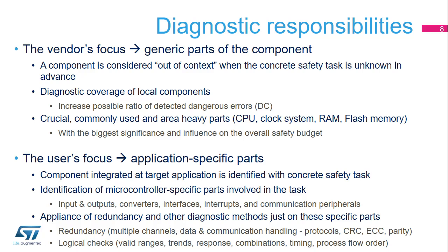An effective way to ensure the required overall safety budget has to be focused on crucial and generic parts of the microcontroller, especially those commonly used by most applications. Any small improvement in the safety of these fundamental and significant parts of the design always brings the biggest gain in the overall safety budget of the component, which is beneficial for each application. Once a microcontroller is included in an application design and the safety task is specified, the safety support can be deployed much more efficiently and cover just the very specific parts of the microcontroller involved in the required safety case. Many efficient methods can then be applied based on detailed knowledge of the application requirements, its design, the process, and the equipment under control.